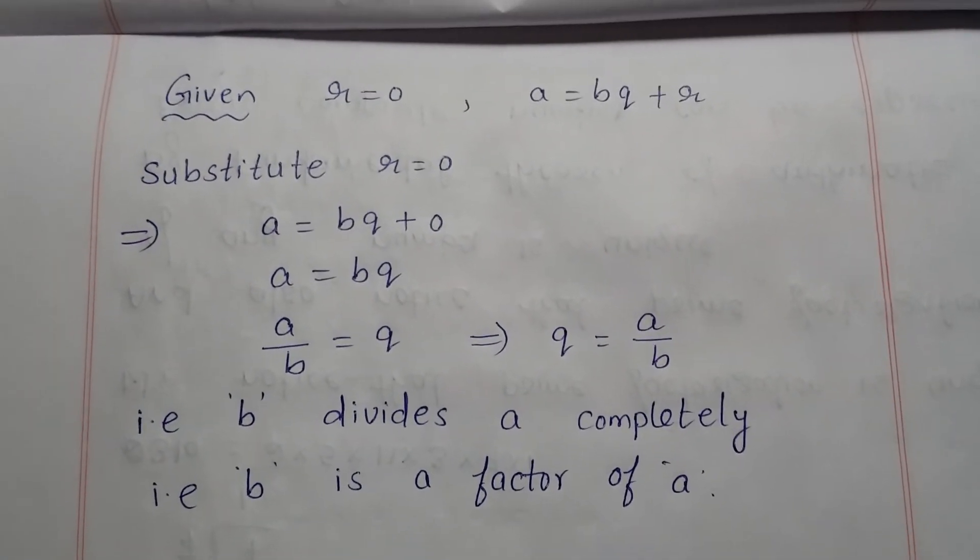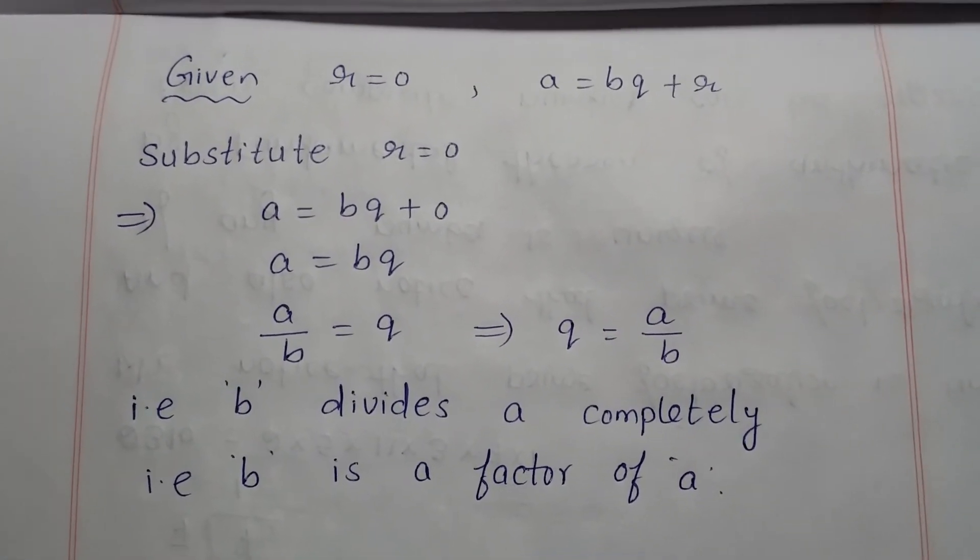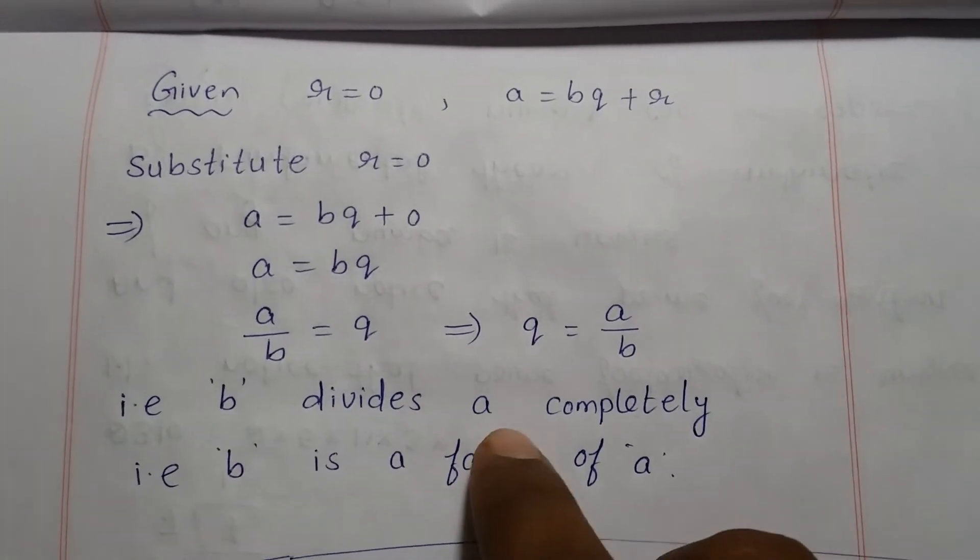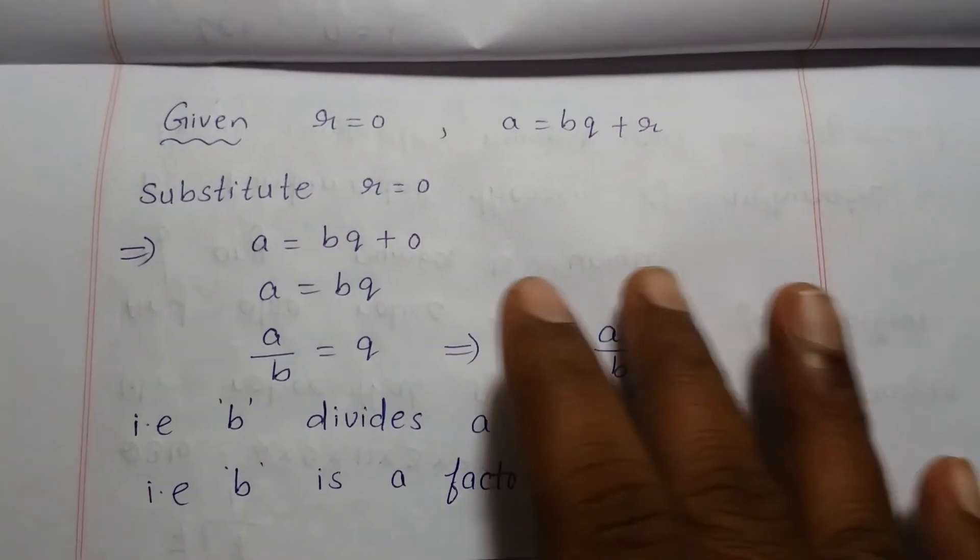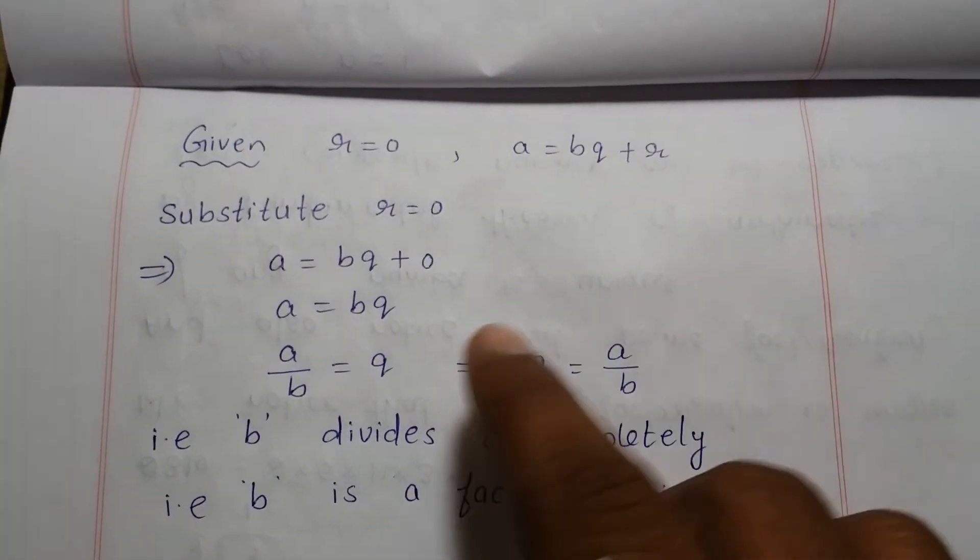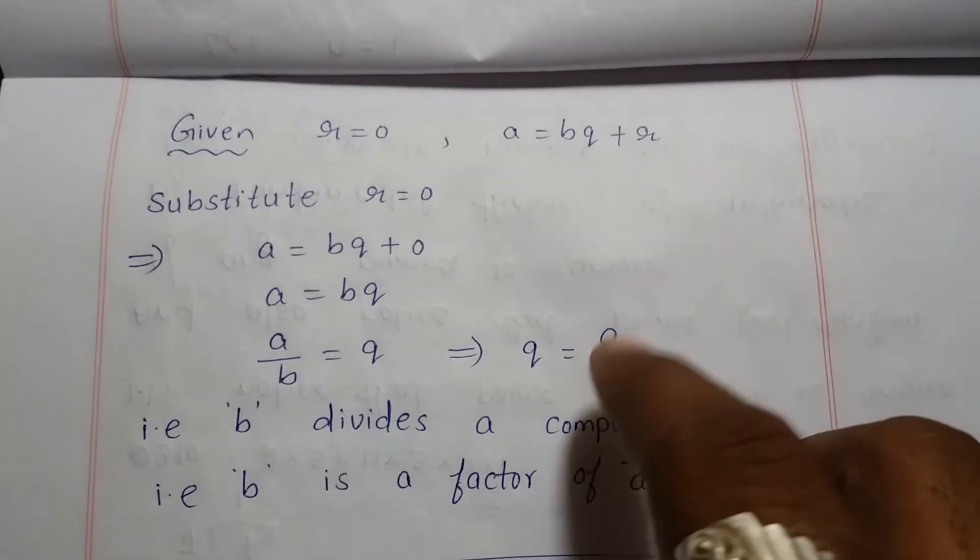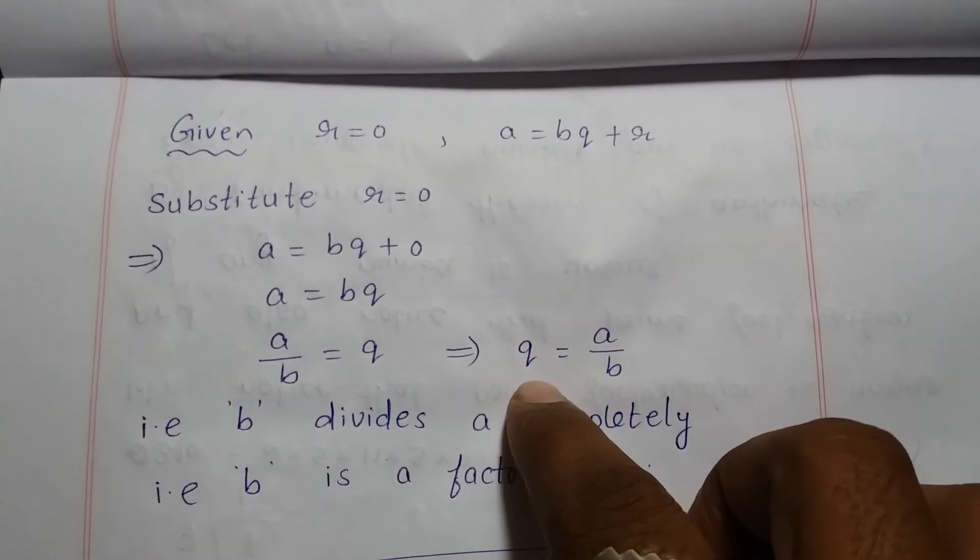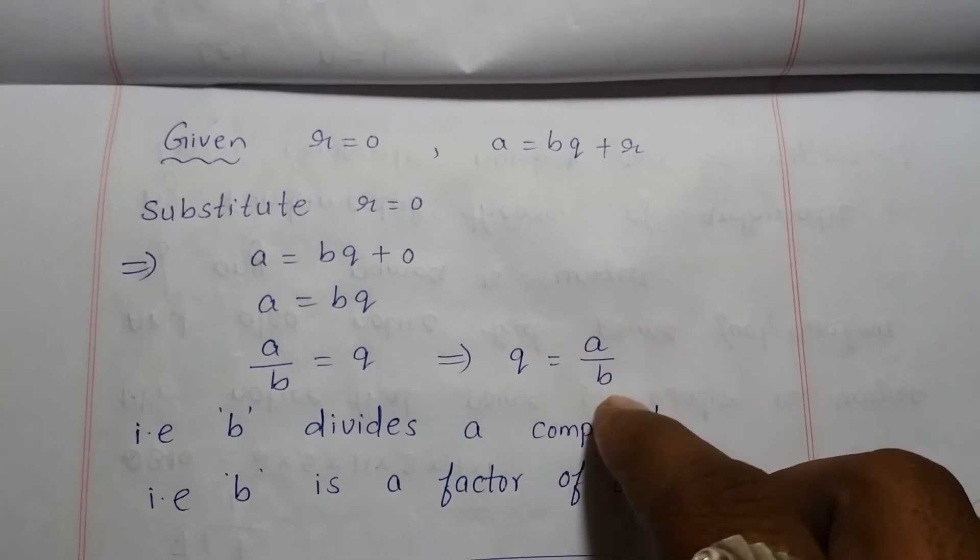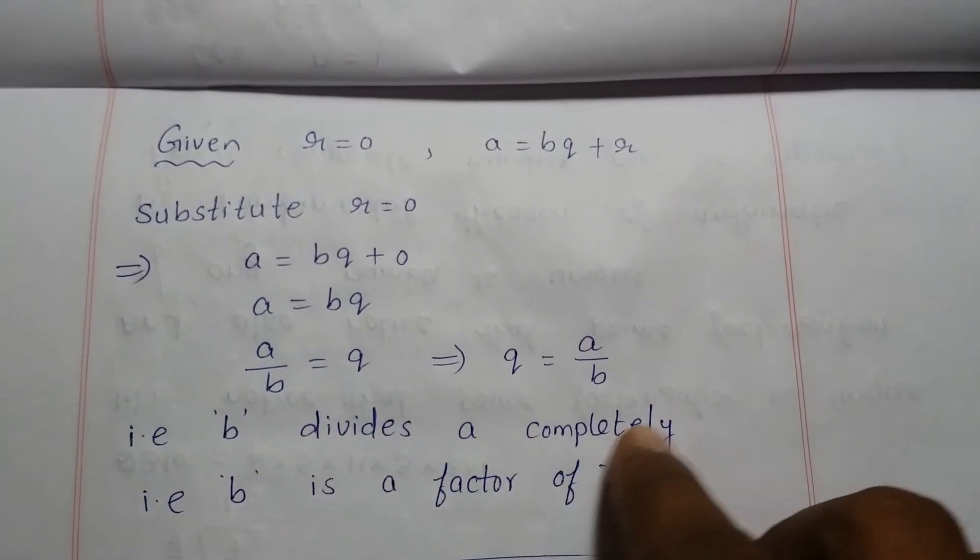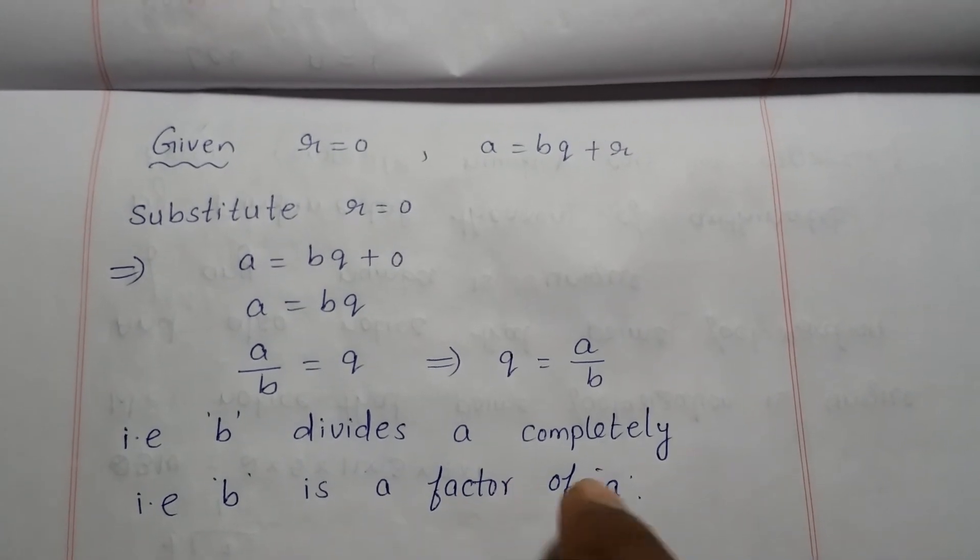but a/b. That is, b divides a completely, so therefore b is a factor of a. So this is the relationship between a, b, and q. The relation is q = a/b. This means that b divides a completely, therefore b is a factor of a.